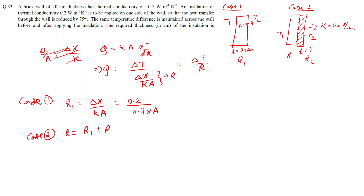For Case 2, the total resistance R is the sum of R1 and R2. R1 is 0.2 upon 0.7 times A. For R2, the thickness is what we have to find, and the thermal conductivity is 0.2, so R2 equals thickness t upon 0.2 times A.